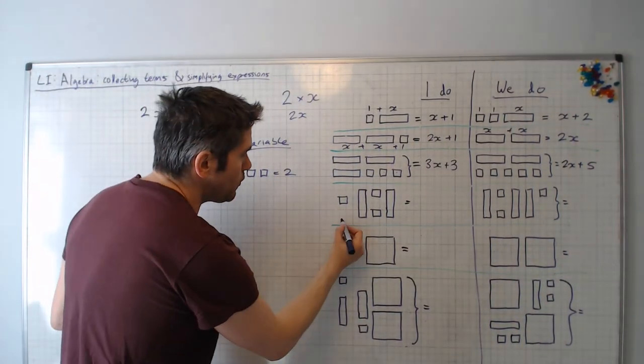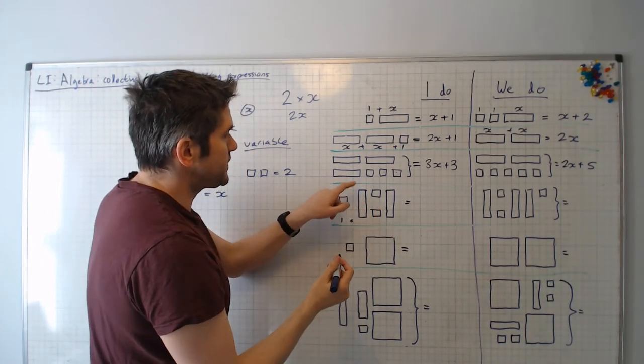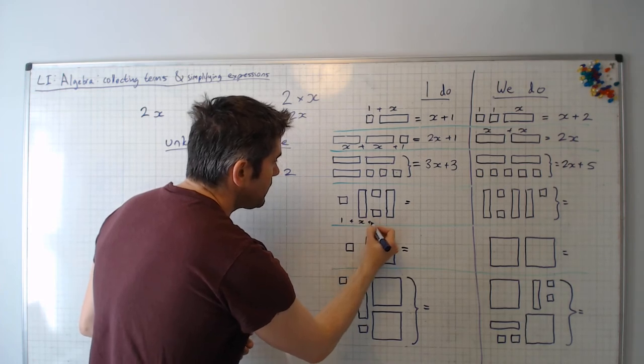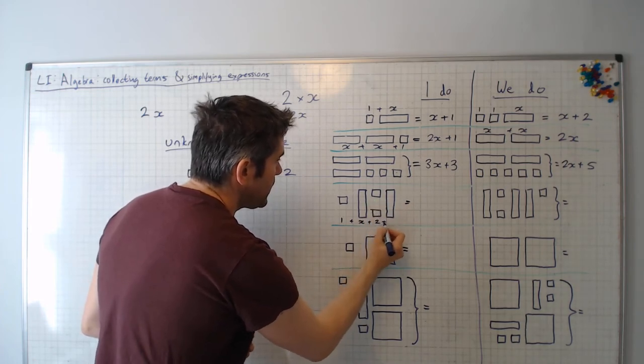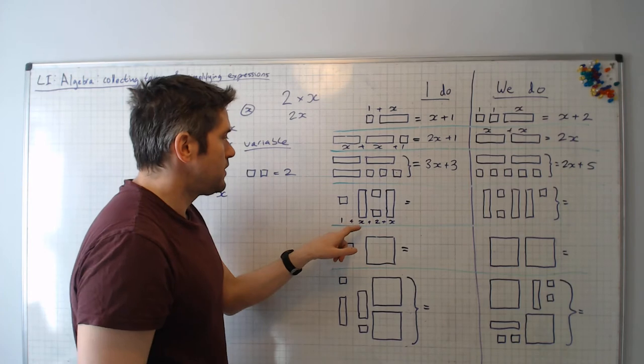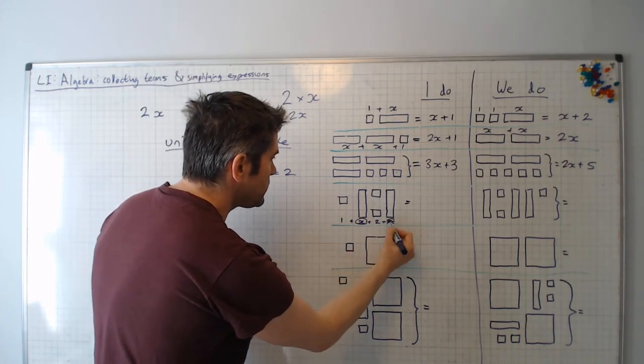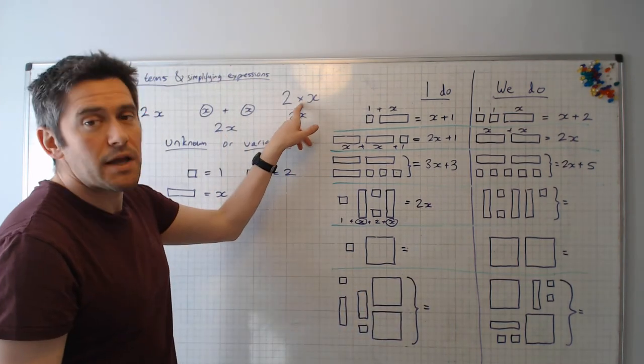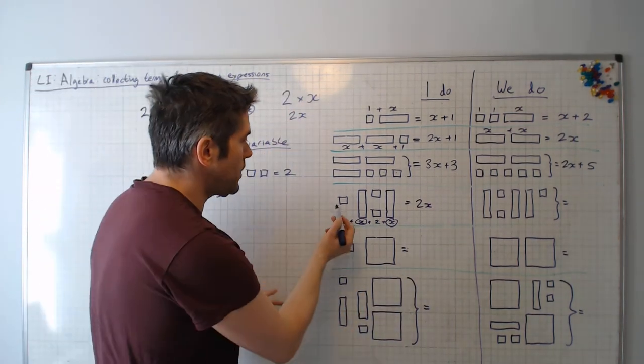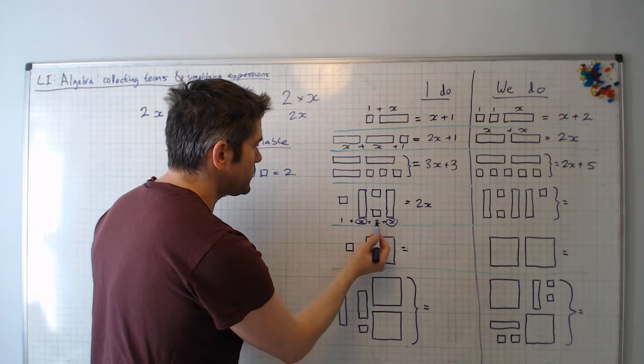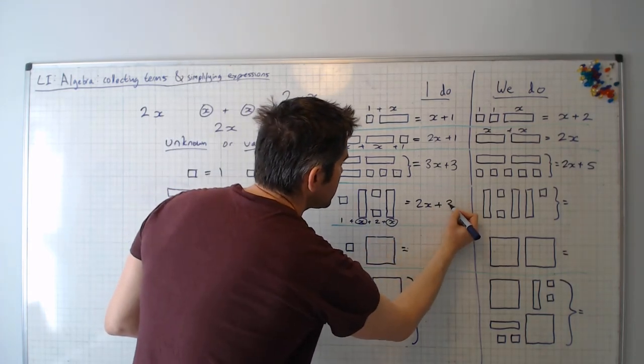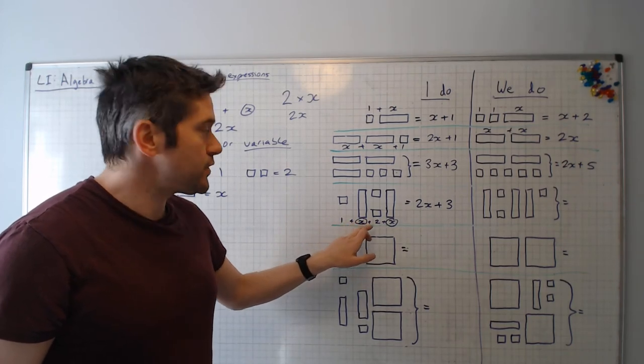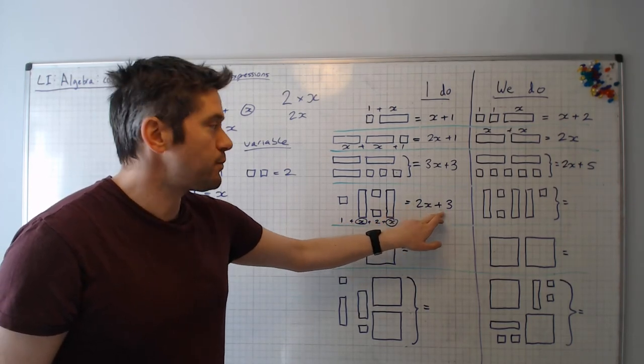So here I guess I've got 1 plus, well it's the same thing. It's just been rotated. That doesn't matter. That's still 1 plus x plus 2 plus x. So in total we can count the x's. We've got 1, 2x. Remember we don't write the multiplication sign in the middle. 2x plus 1, 2, 3. So we've simplified this expression 1 plus x plus 2 plus x into 2x plus 3.